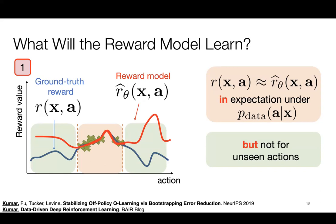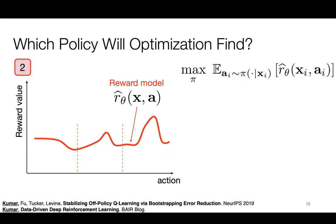More technically, you can quantify this difference as distributional shift: if you train a model via empirical risk minimization on some data, you can't guarantee the model will also have low loss under a different distribution of inputs — in this case, a different distribution of actions. So once you have a reward model with all these spurious peaks outside the data, you can wonder what happens in step two when you optimize the policy to maximize the reward model.